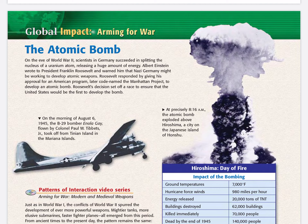The atomic bomb. On the eve of World War II, scientists in Germany succeeded in splitting the nucleus of a uranium atom, releasing a huge amount of energy. Albert Einstein wrote to President Franklin Roosevelt and warned him that Nazi Germany might be working to develop atomic weapons. Roosevelt responded by giving his approval for an American program, later codenamed the Manhattan Project, to develop an atomic bomb. Roosevelt's decision set off a race to ensure that the United States would be the first to develop the bomb.